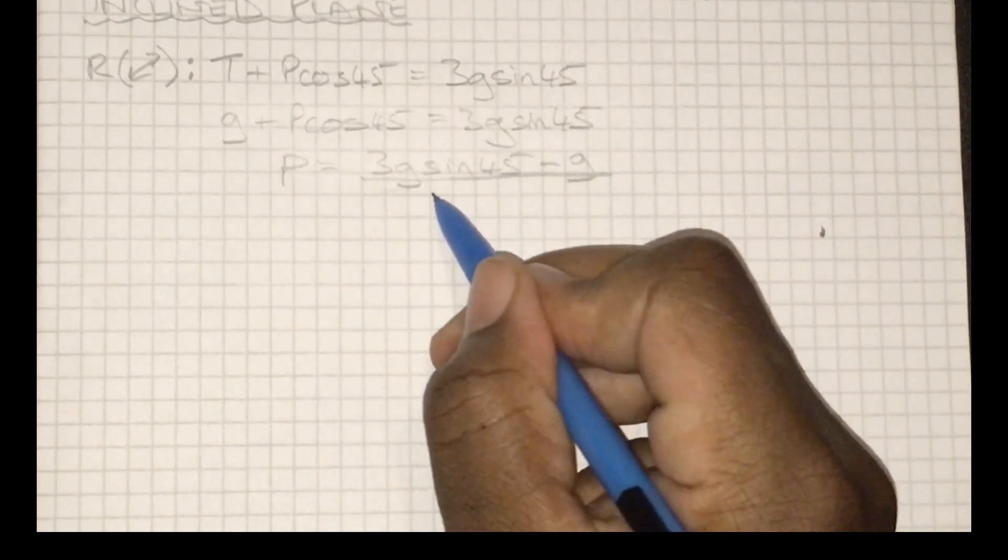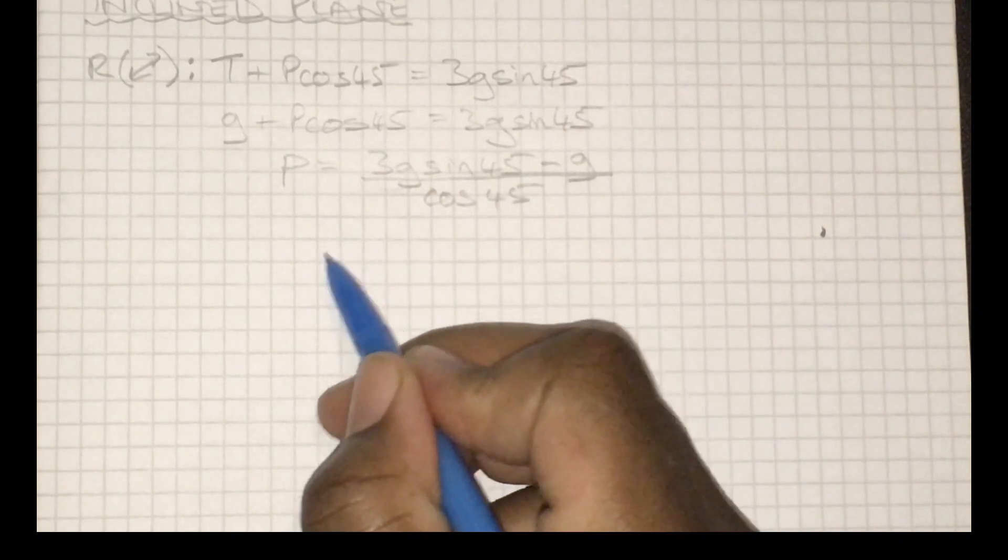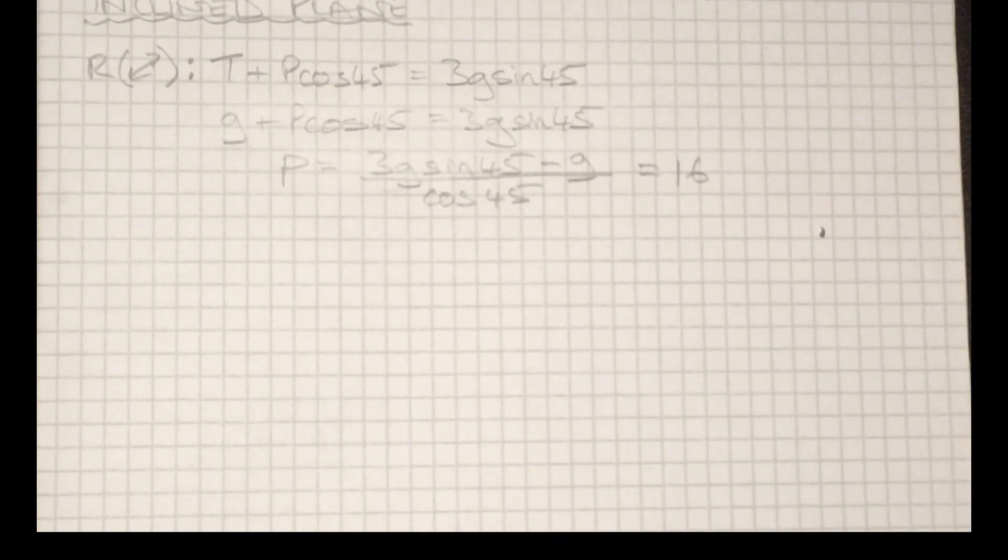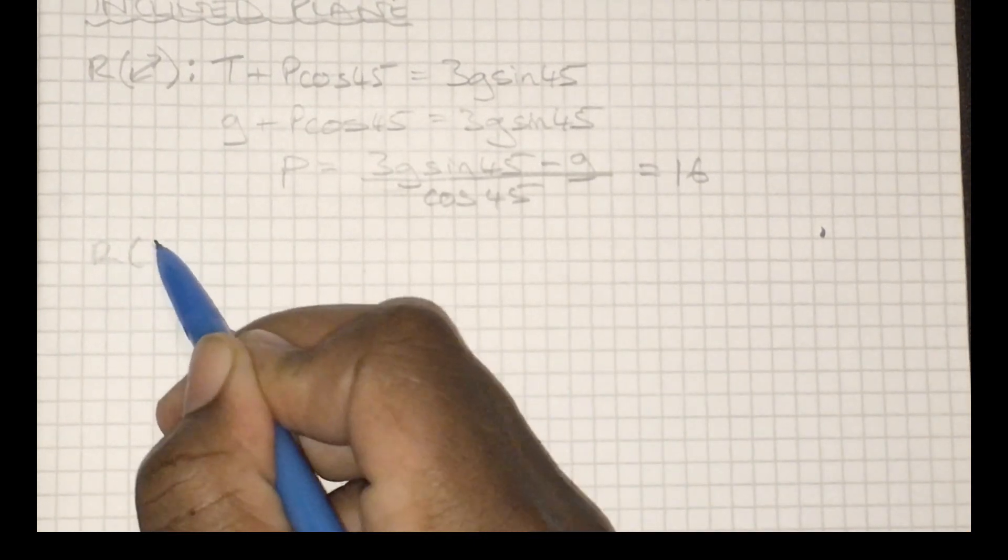So just some smart rearranging here. Before I put anything into the calculator, I'm going to make sure I have this expression, this fraction, written out. And now I can just put all these bits into the calculator, and nicely it gives us a value 16.